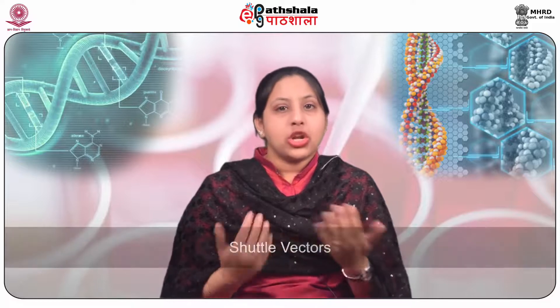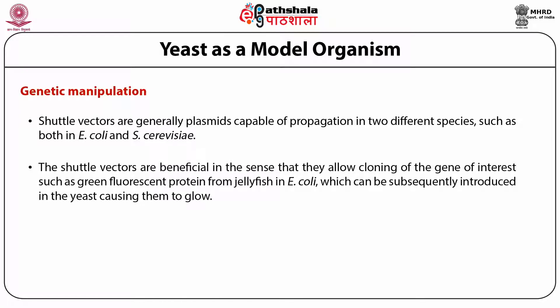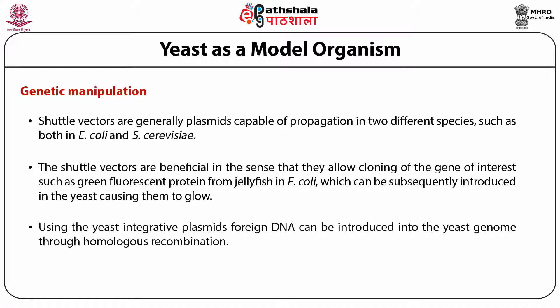Genetic manipulation of yeast is quite feasible. An important contribution of model yeast was the study of biochemical function of gene products by facilitating the introduction of mutations in and out of the yeast genome. Various drugs can also be tested on yeast cells containing mutated human genes to check if the drug restores normal function. Most S. cerevisiae vectors are shuttle vectors — plasmids capable of propagation in two species such as E. coli and S. cerevisiae — allowing cloning of genes of interest, such as green fluorescent protein from jellyfish in E. coli, which can be subsequently introduced into yeast. Using yeast integrative plasmids, foreign DNA can be introduced via homologous recombination, facilitating gene swapping and knockouts.